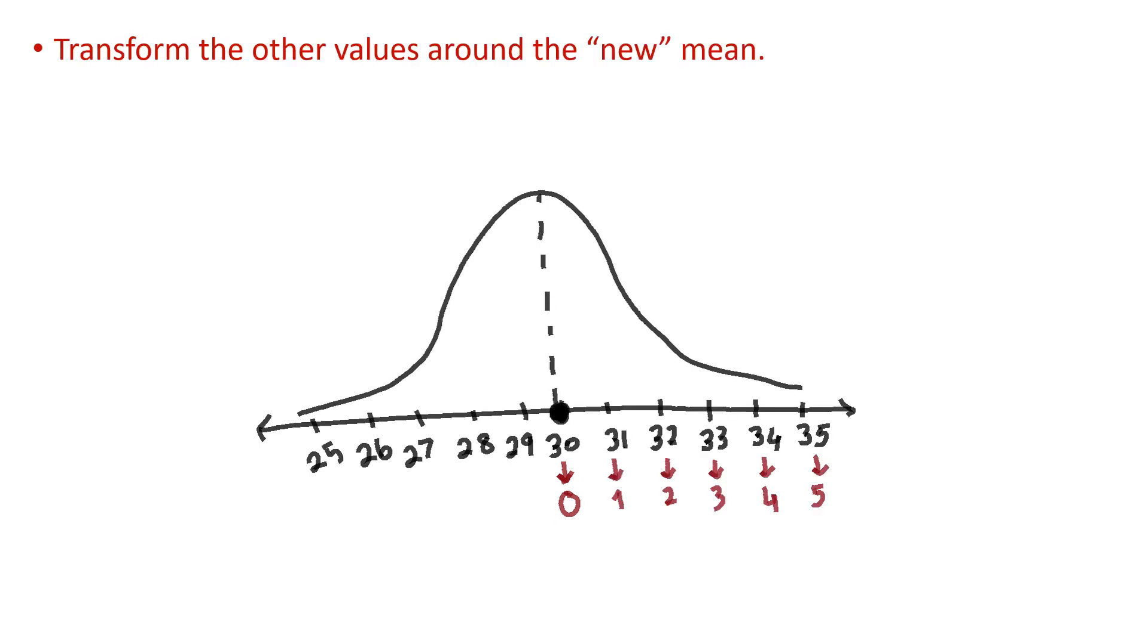We continue centering by transforming the other values around the new mean. So the average 30 becomes 0, 31 becomes 1. The formula is value minus mean. 31 minus 30, 1. 32 minus 30, 2.